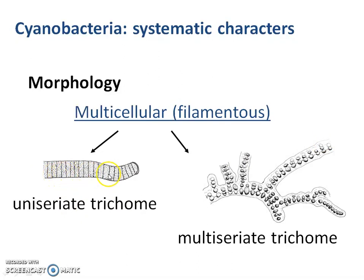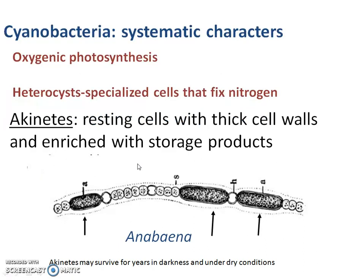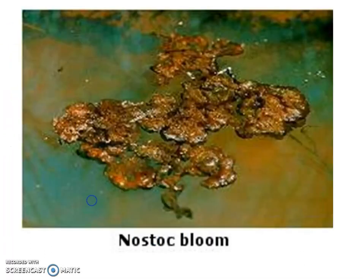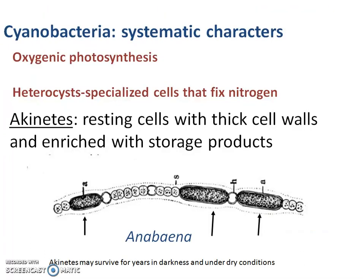One cell is attached to the other and they form the trichome thread-like structure. These are the vegetative cells of Nostoc, which perform photosynthesis. This is a heterocyst, which is a specialized cell to fix nitrogen. This is an akinete, a resting cell with a thick wall and enriched with storage products. Akinetes may survive for years in darkness and under drier conditions.